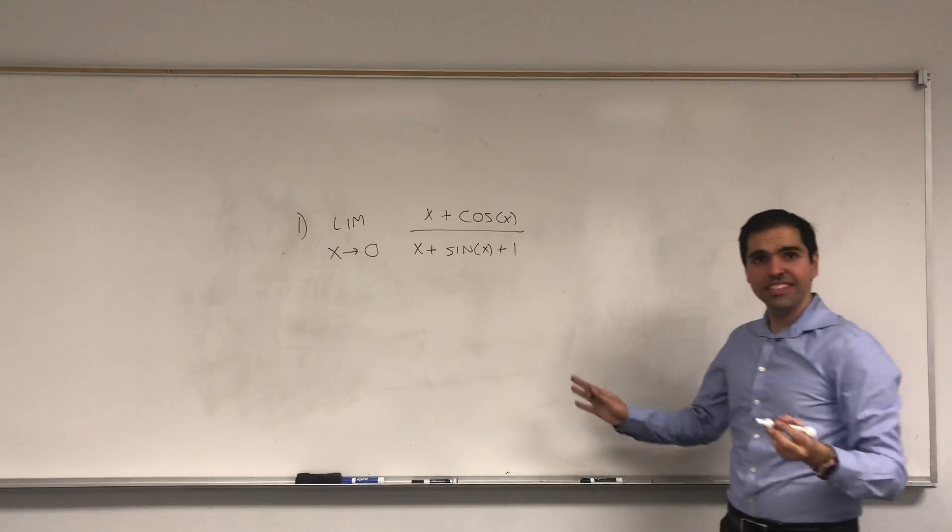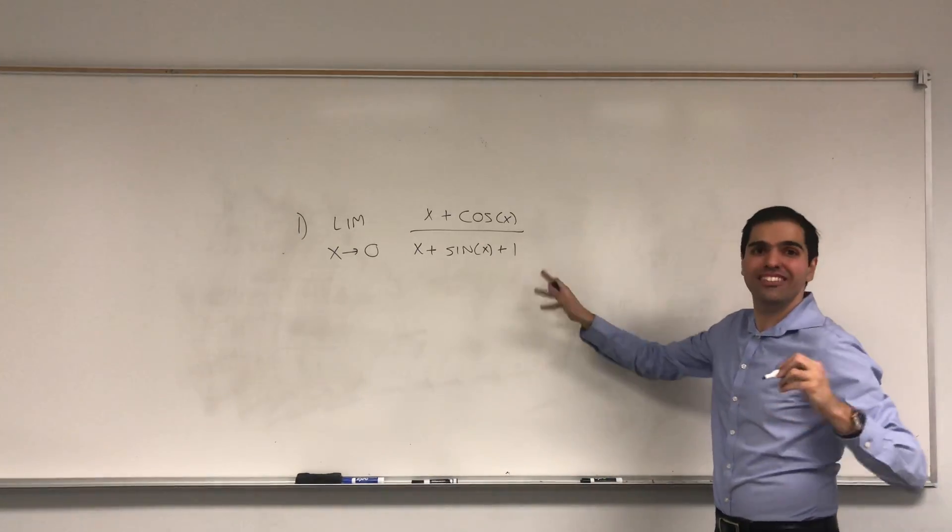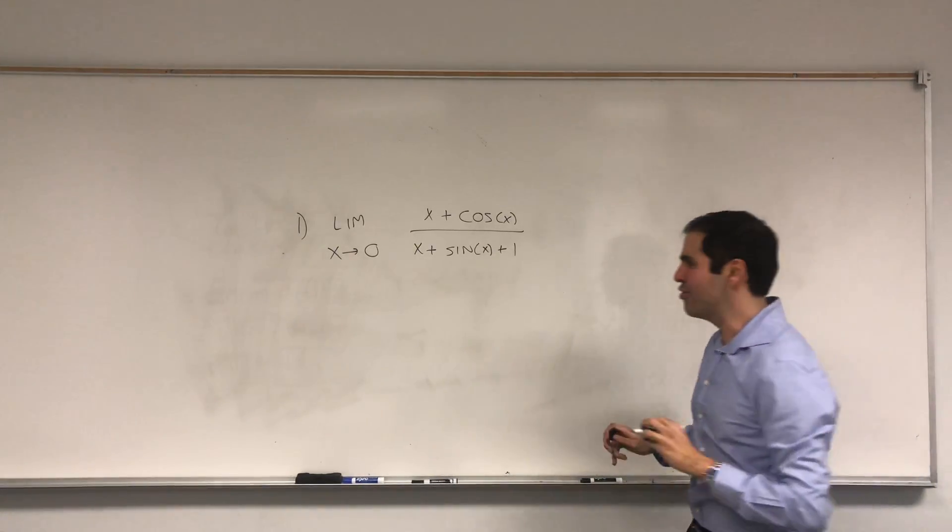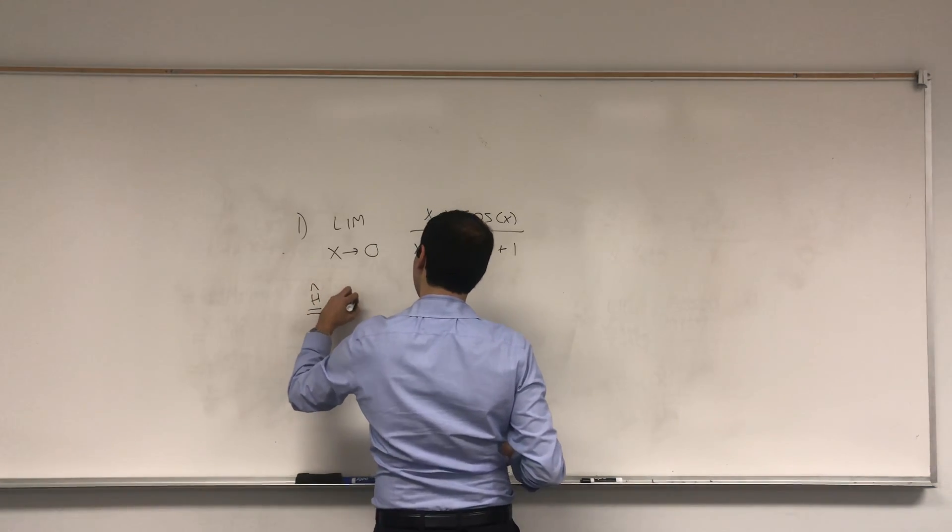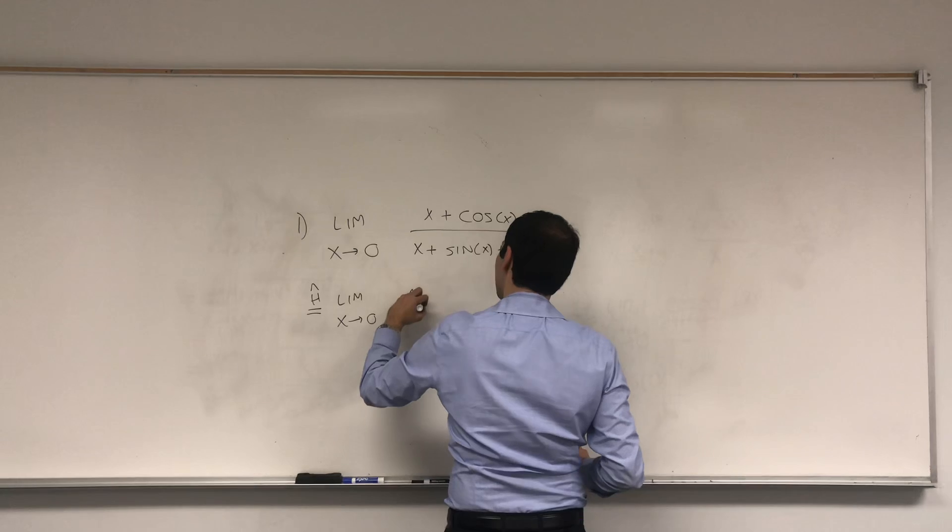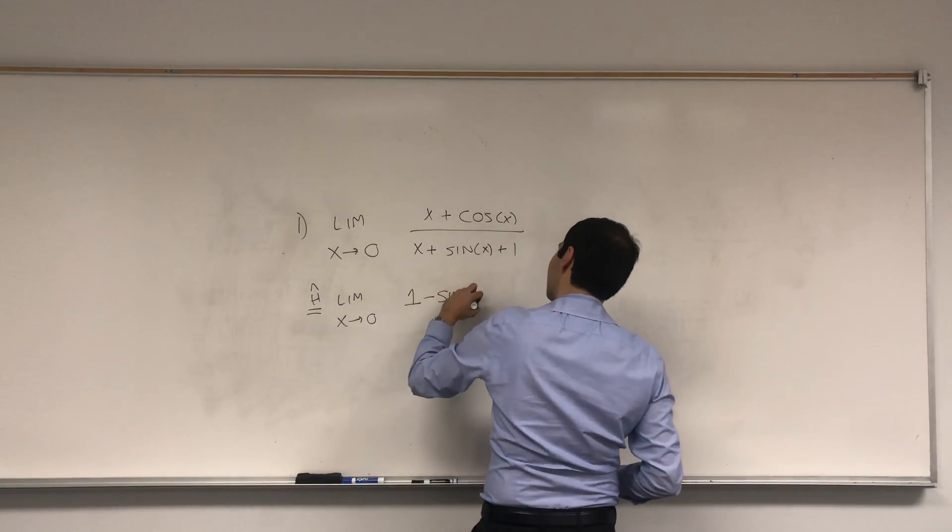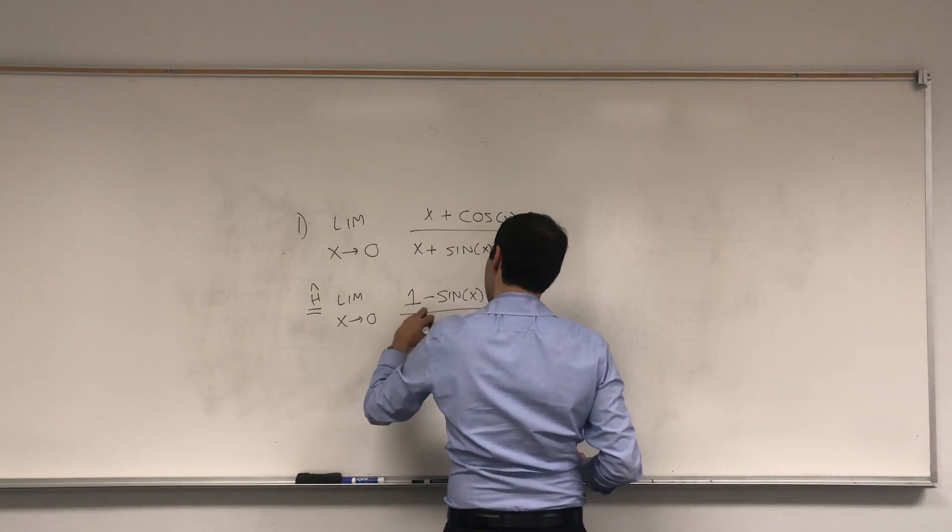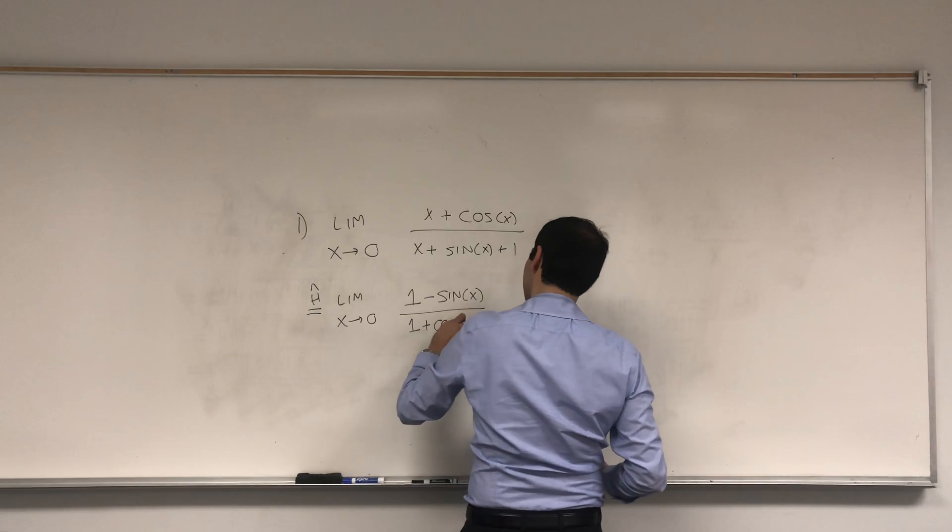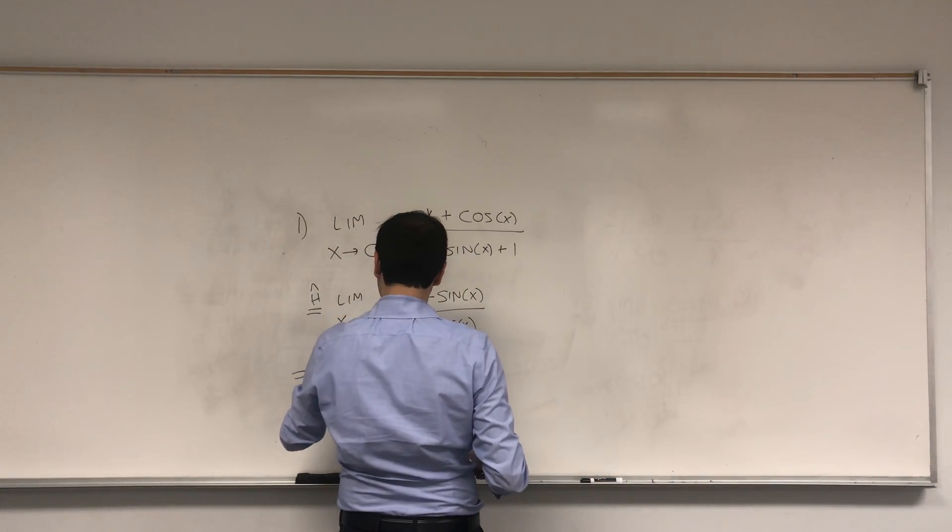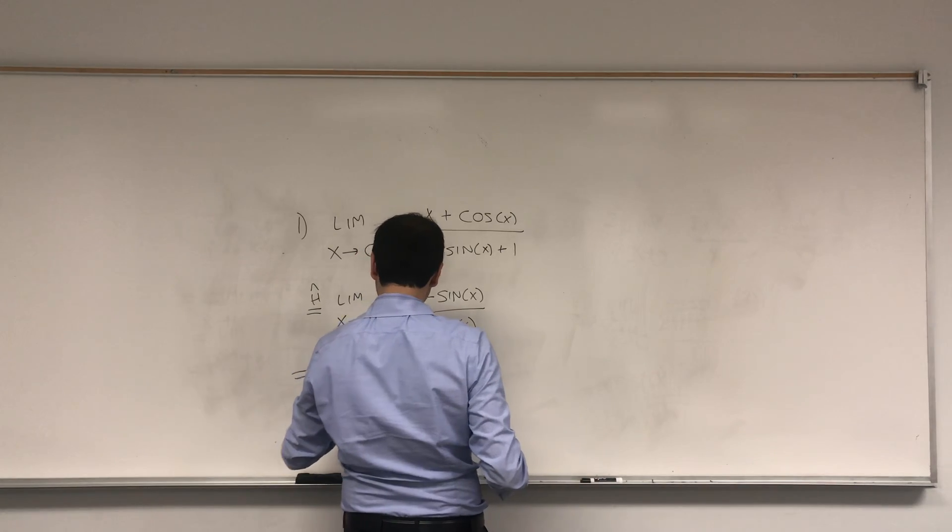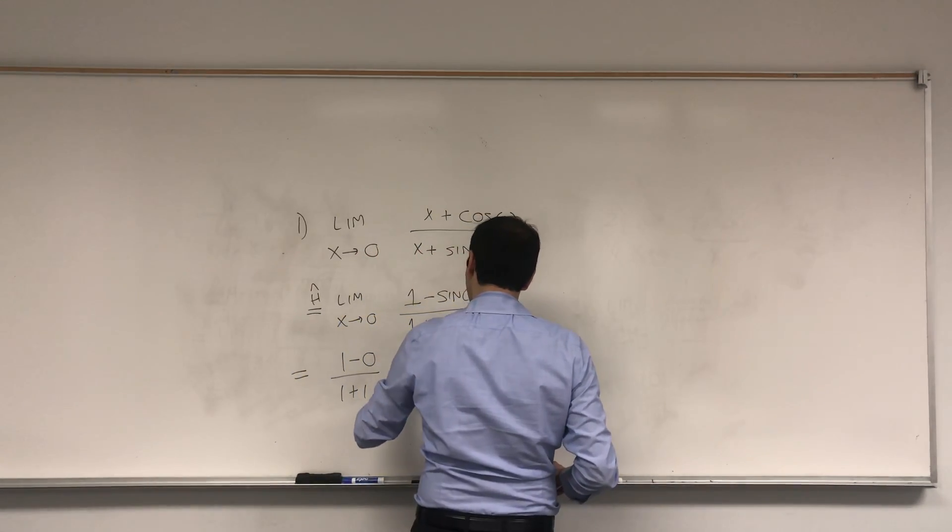And let's see if there's a mistake in the following proof or not. Well, if we apply L'Hopital's rule, you get limit x goes to 0 of 1 minus sine of x, and then 1 plus cosine of x. And this you just plug in, 1 minus 0 over 1 plus 1, so the limit should be 1 half.